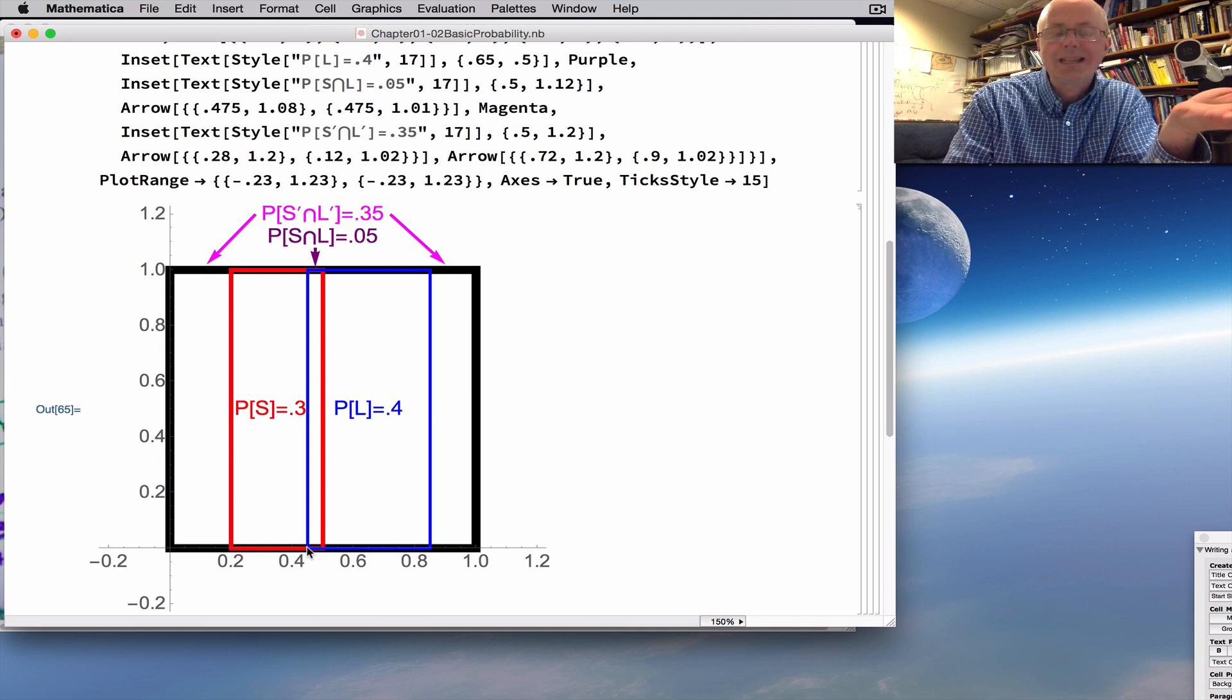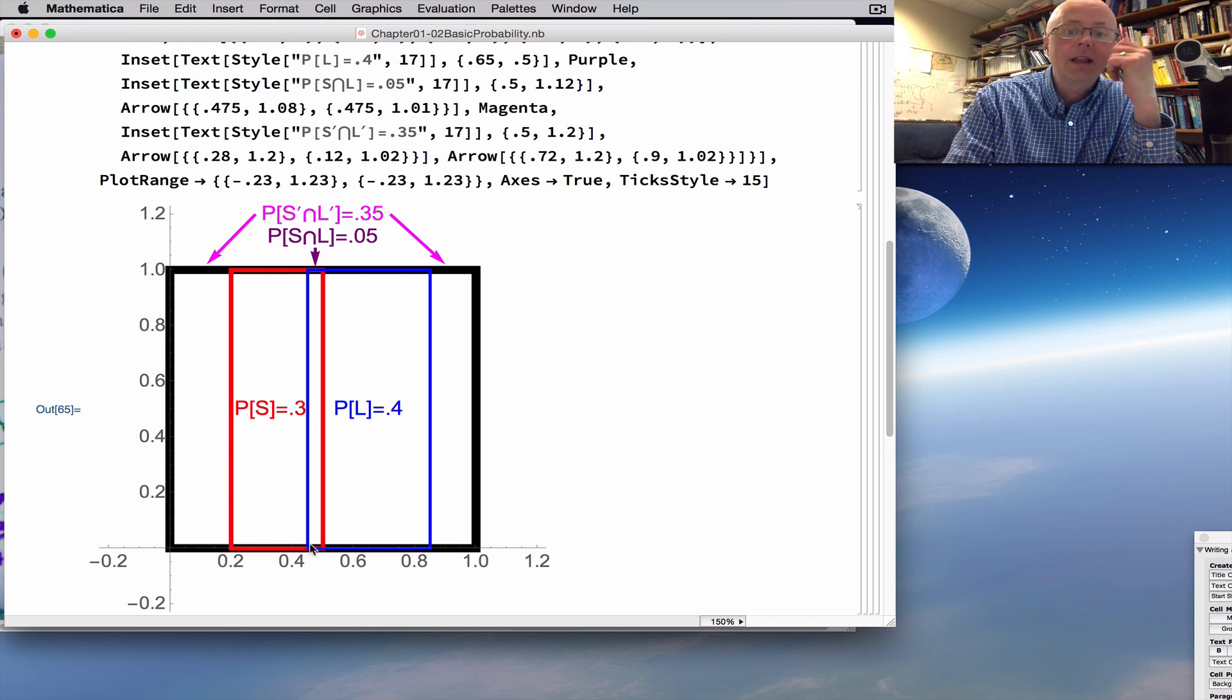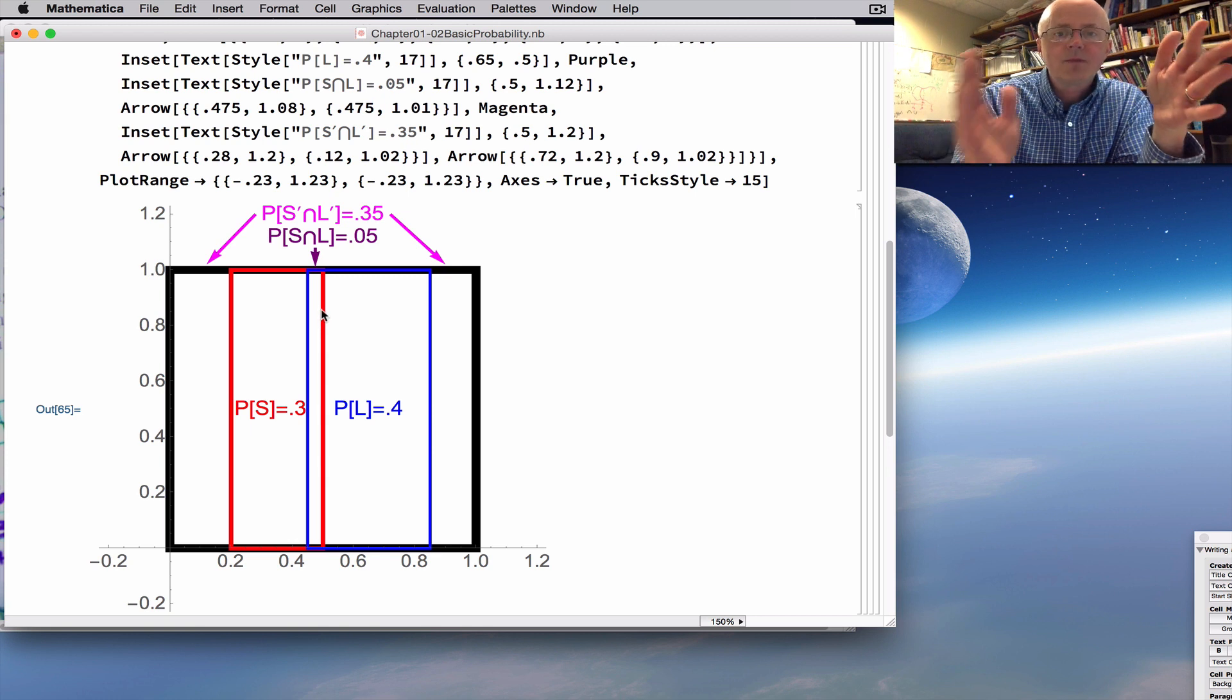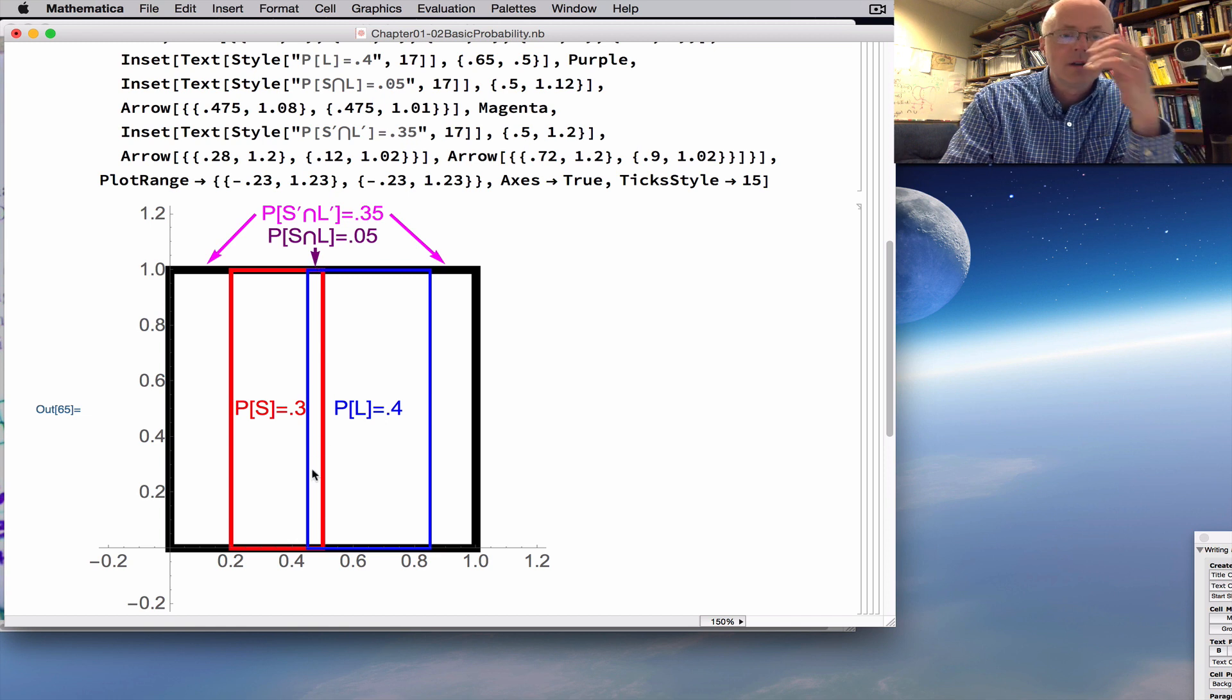The base is 0.5 minus 0.2 equals 0.3 in length, so the area is 0.3 times 1, or 0.3, 30% of the overall area of the square, which has area 1. The blue rectangle has a base from 0.45 to 0.85. It has a base length of 0.4. Height is still 1. The area is 0.4. You can see it's bigger than the red rectangle. I purposely situated these so that the overlap has an area of 0.05.